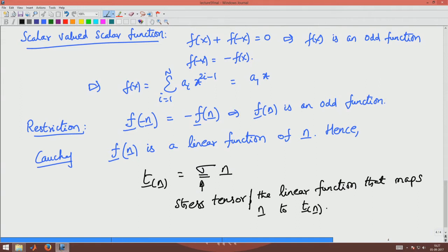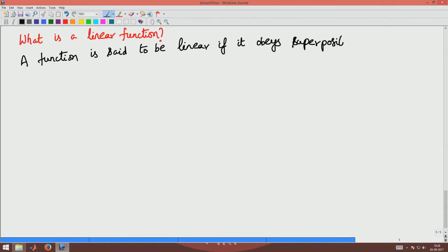So we will understand first what is a linear function. A function is said to be linear if it obeys superposition and scaling.